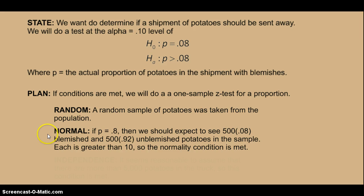If the true proportion of potatoes is 0.08, then we should expect to see 500 times 0.08 blemished and 500 times 0.92 unblemished. And notice I didn't actually calculate these two numbers. You can if you want to, but since it's clear that both of those is greater than 10, the normality condition is met.